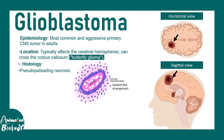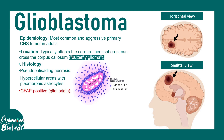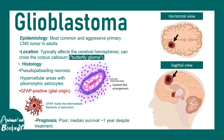When it comes to histology, pseudopalisading necrosis is pretty obvious in this particular tumor. Hypercellular areas with pleomorphic astrocytes is one of the common features, and there is a garland-like arrangement seen in this kind of tumor. It is always GFAP positive, meaning it has a glial origin. GFAP marks the intermediate filament of the astrocytes, which is why this tumor is of astrocytic origin.